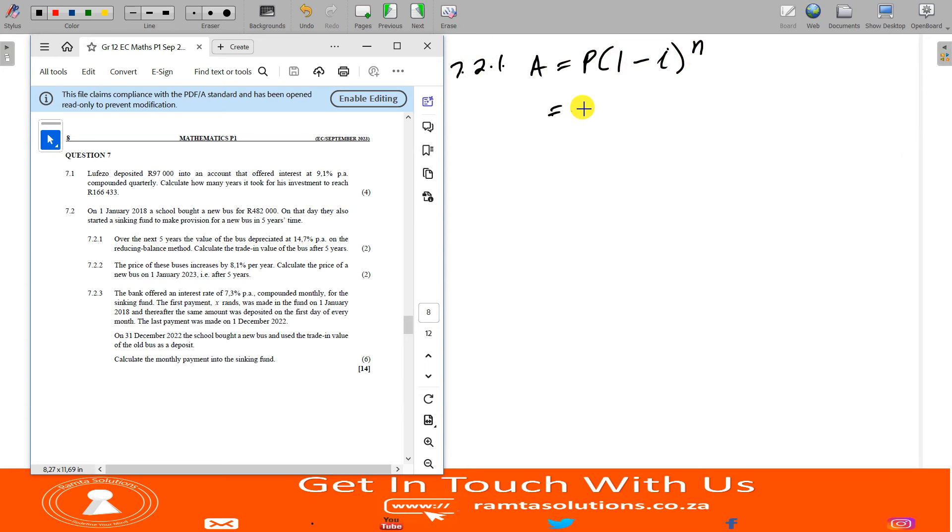So 7.2.1, this is A equals P into 1 minus I to the N. The value of the bus today is 482,000 rands. It is depreciating at 14.7% which is 0.147 for 5 years. So this is 482,000 times 1 minus 0.147 to the power 5. The value of the bus after 5 years is 217,666 rands and 80 cents.